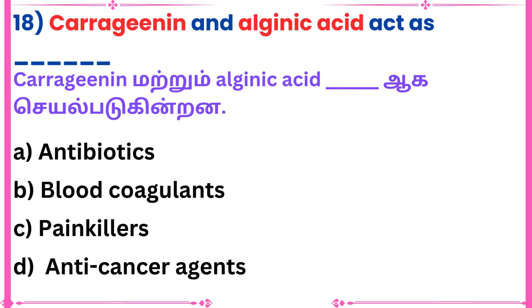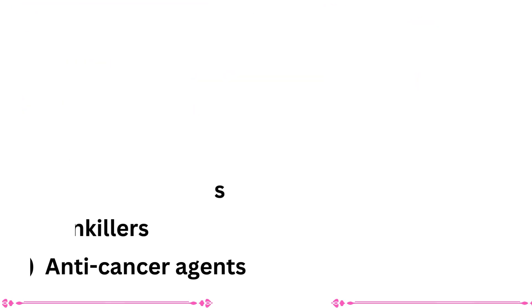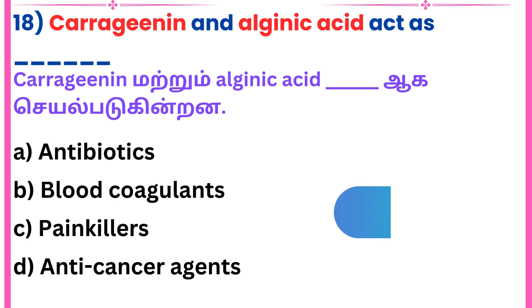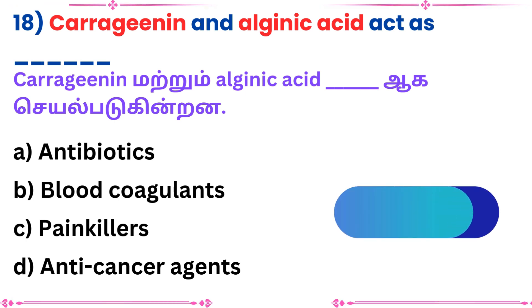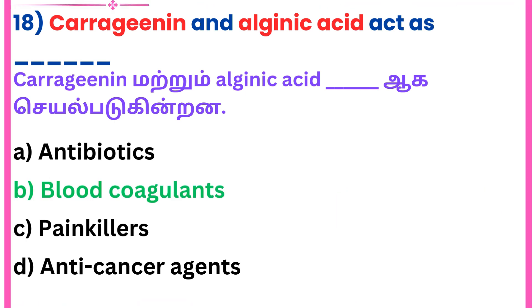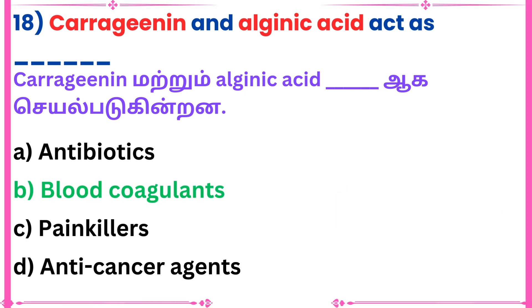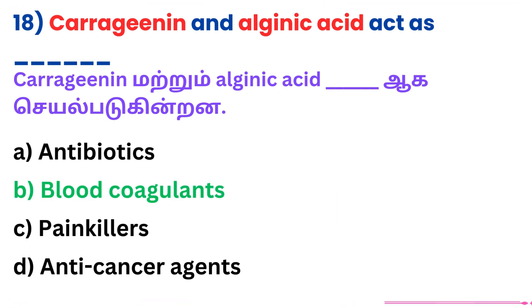18th question: Carrageenan and alginic acid act as what? Answer: Blood coagulants.